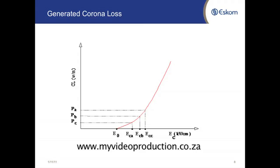Now, once you have a line design that you would like to see, you calculate the conductor surface gradient. The lecture of Professor Jan Reinders is helpful in this — that means you can calculate the individual conductor surface gradients.